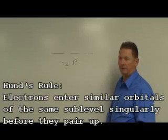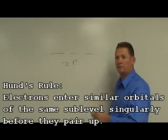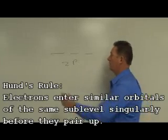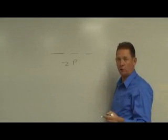Hund's Rule specifies that electrons that enter orbitals of similar energy values will enter them singularly before they pair up. Which means, if I'm putting electrons into the 2p, let's look at nitrogen for just a second.